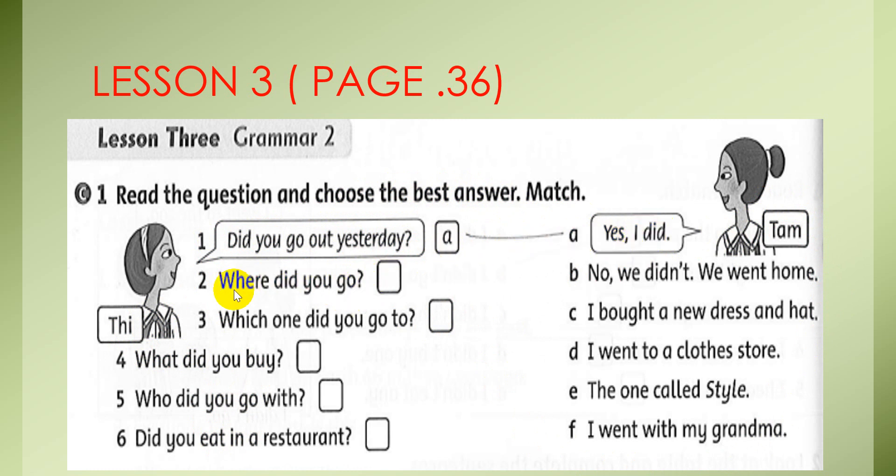How about number 2? Where did you go? Answer D, I went to a clothes store. How about number 3? Which one did you go to? E, and after that we match E, the one called Style. I'm sorry, class. And number 4, what did you buy?